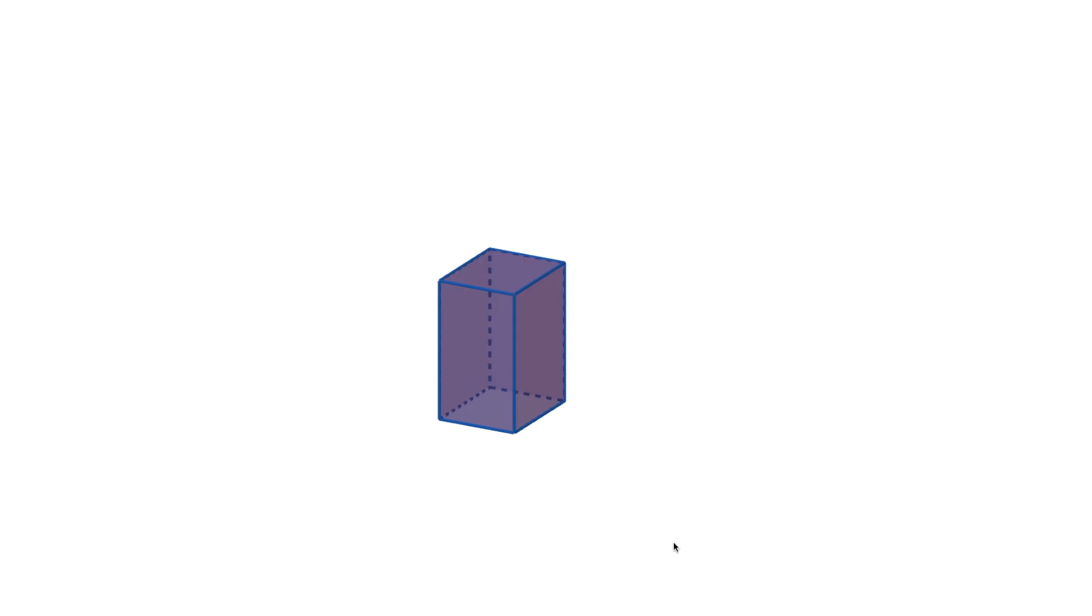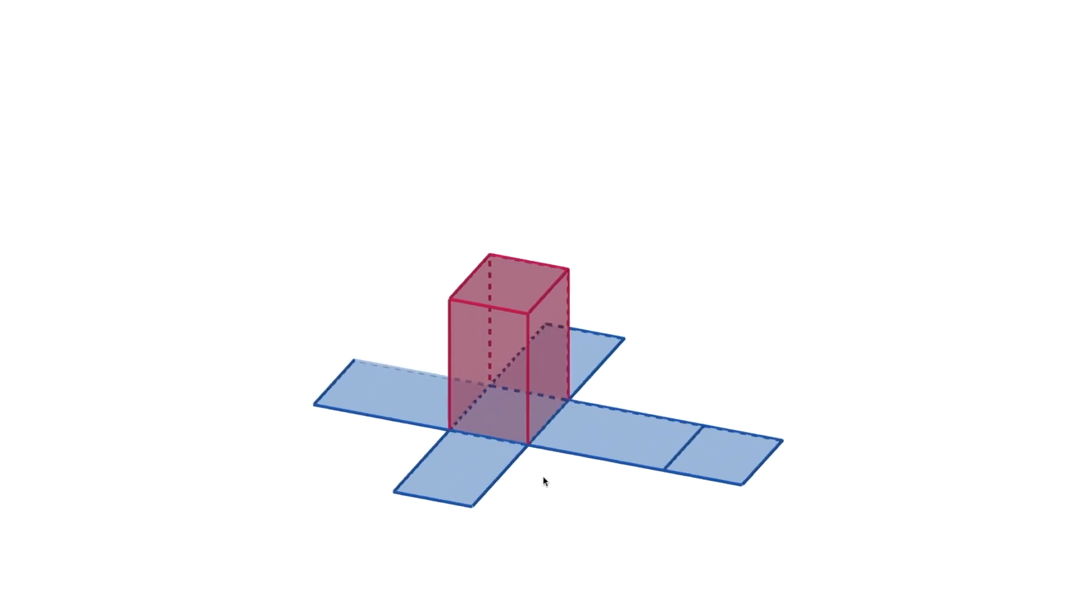Now what I can do with this rectangular prism is break it apart and show you the net. So just pull on the side here, you can see we have the net of the rectangular prism. I'll rotate it around so you can see.